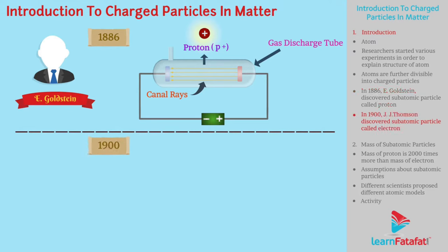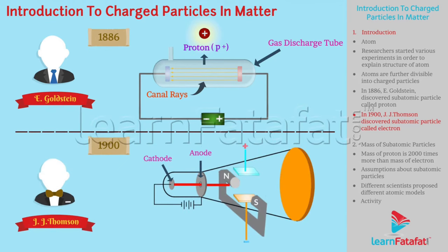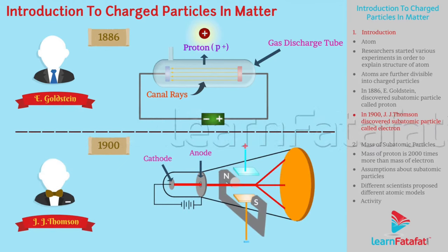Later, British scientist J.G. Thomson discovered another subatomic particle with an opposite charge to proton — a negatively charged particle called electron.